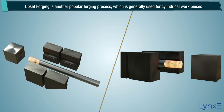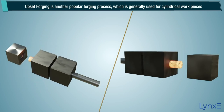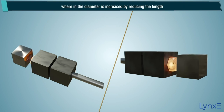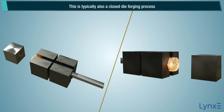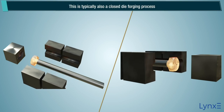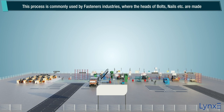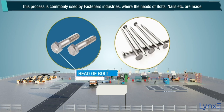Upset forging is another popular forging process, which is generally used for cylindrical workpieces, wherein the diameter is increased by reducing the length. This is typically also a closed die forging process, commonly used by the fasteners industry, where the heads of bolts, nails, etc. are made.